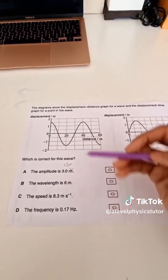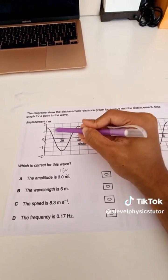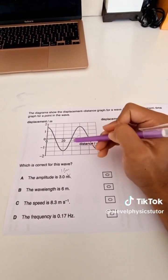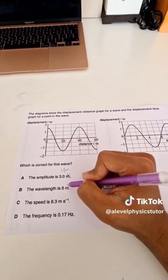The wavelength is the distance for one complete oscillation. If one complete oscillation starts here and ends here, for example from peak to peak, that counts as one complete oscillation. That would be a distance from 0 to 40, so that's 40 meters, so this is incorrect.